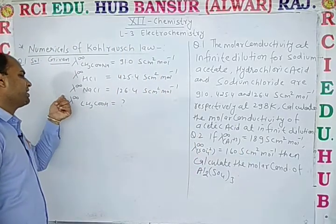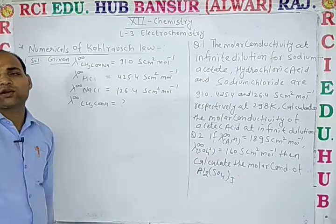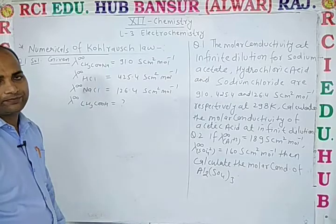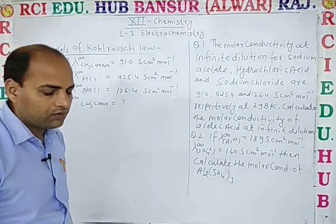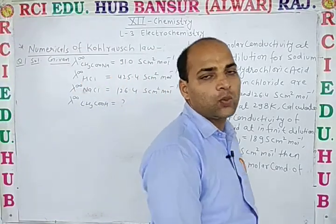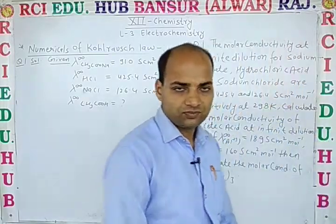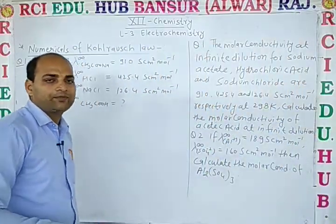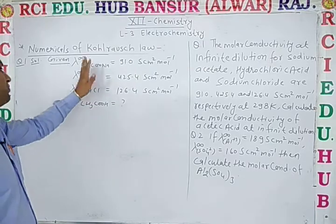You have to find out λ∞ of CH₃COOH. For this, we use Kohlrausch's law of independent migration of ions, as we discussed in the application part.